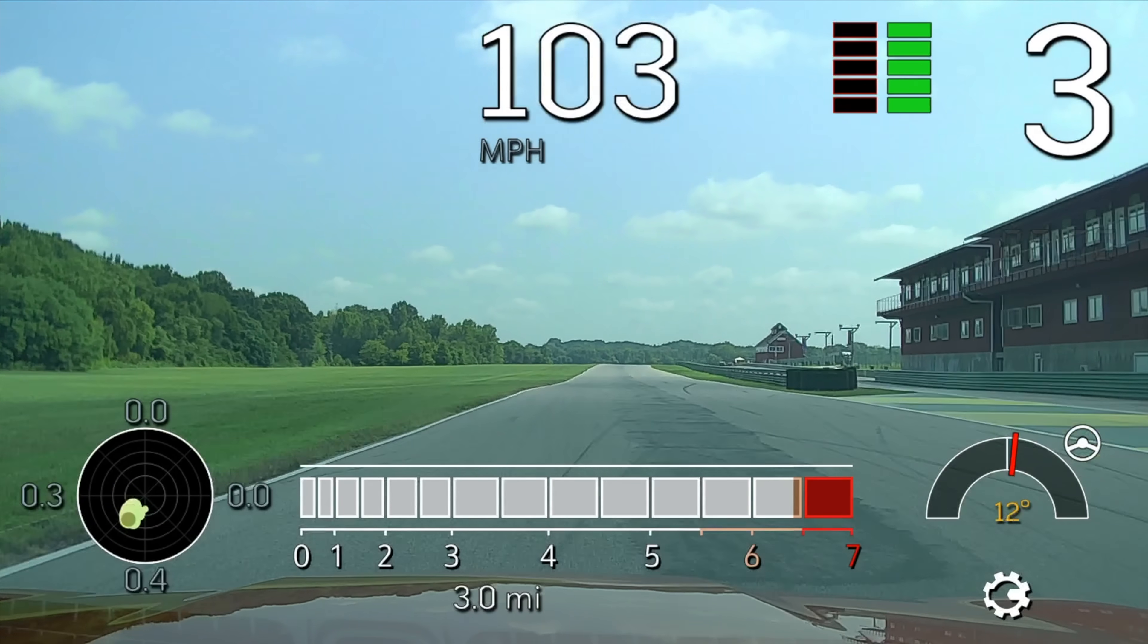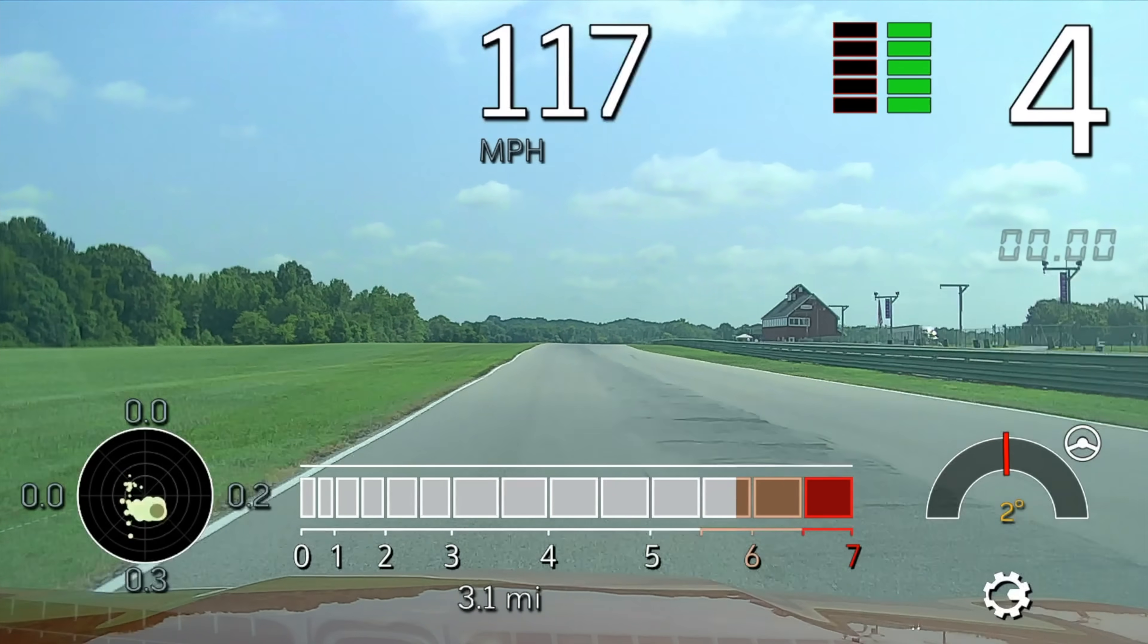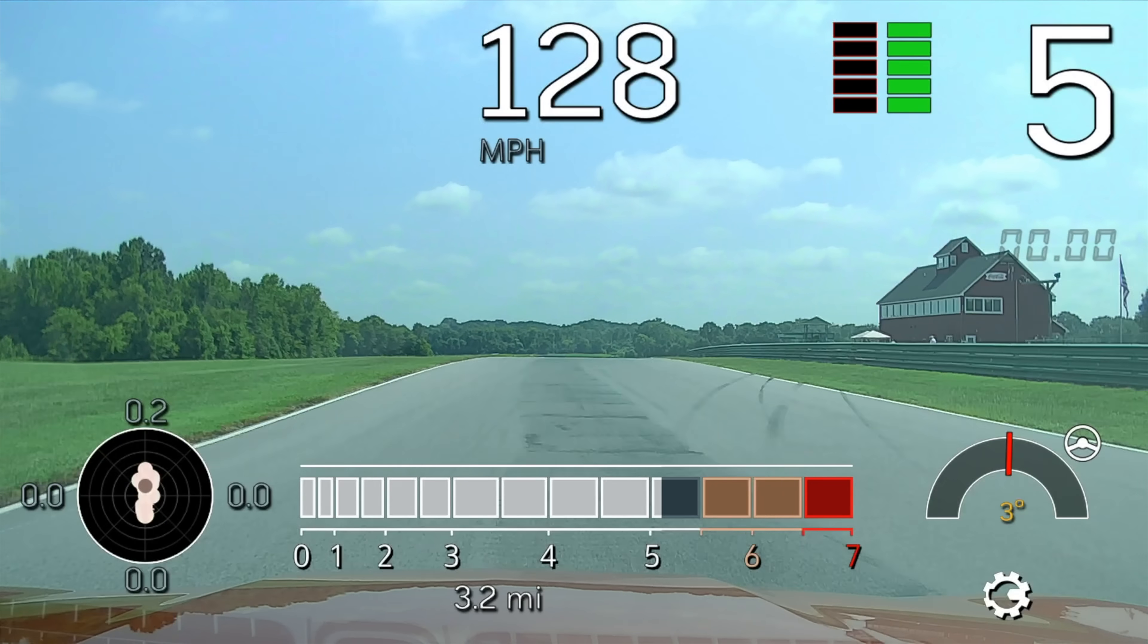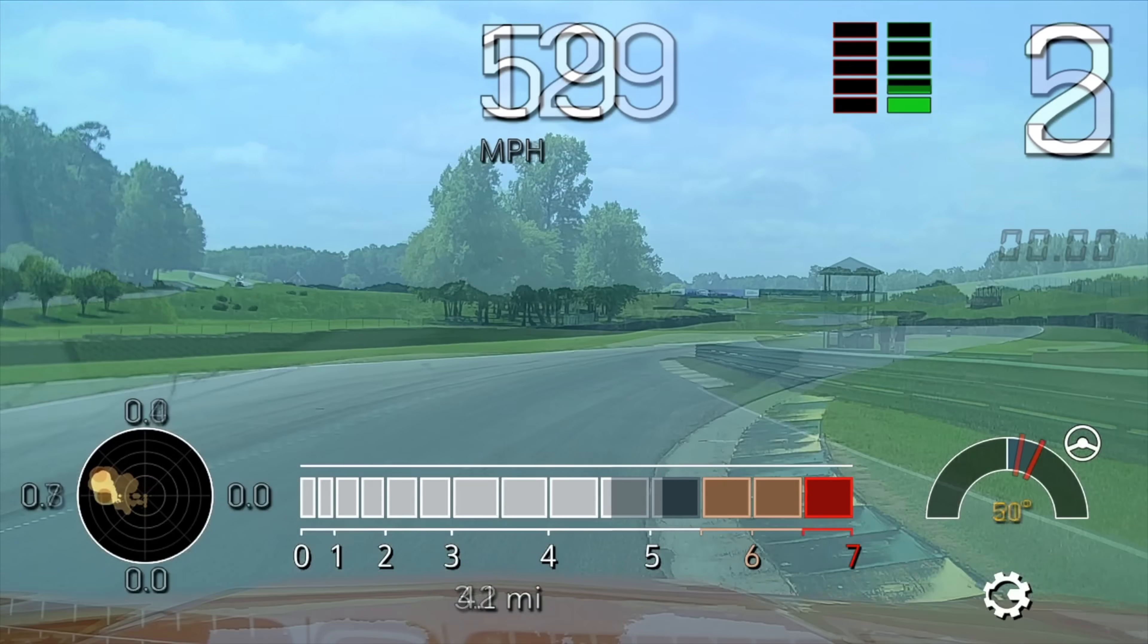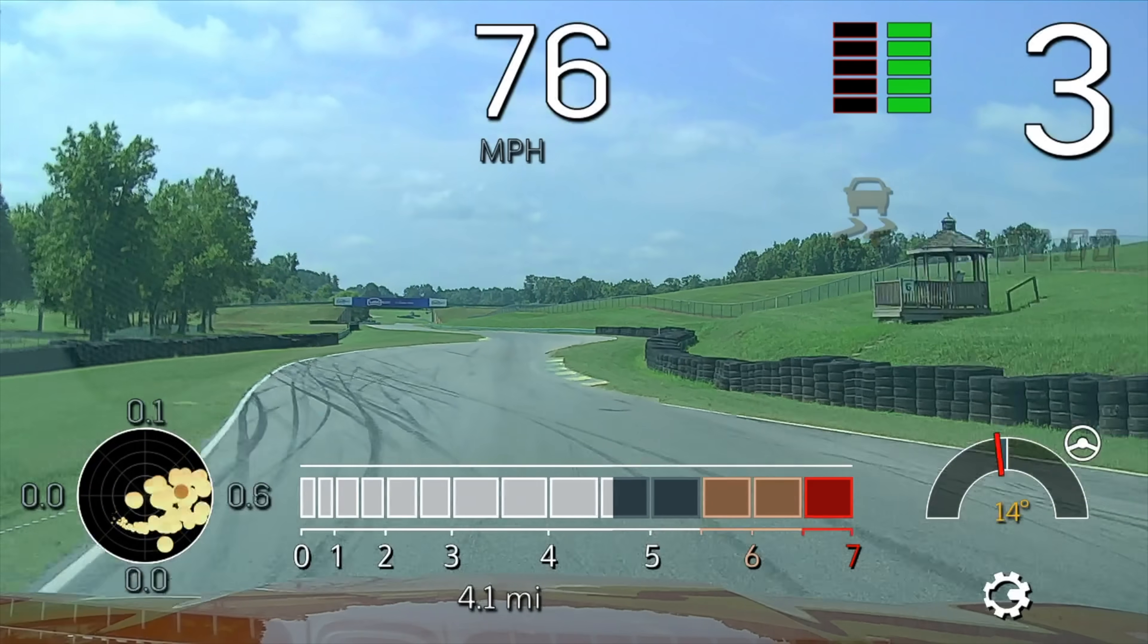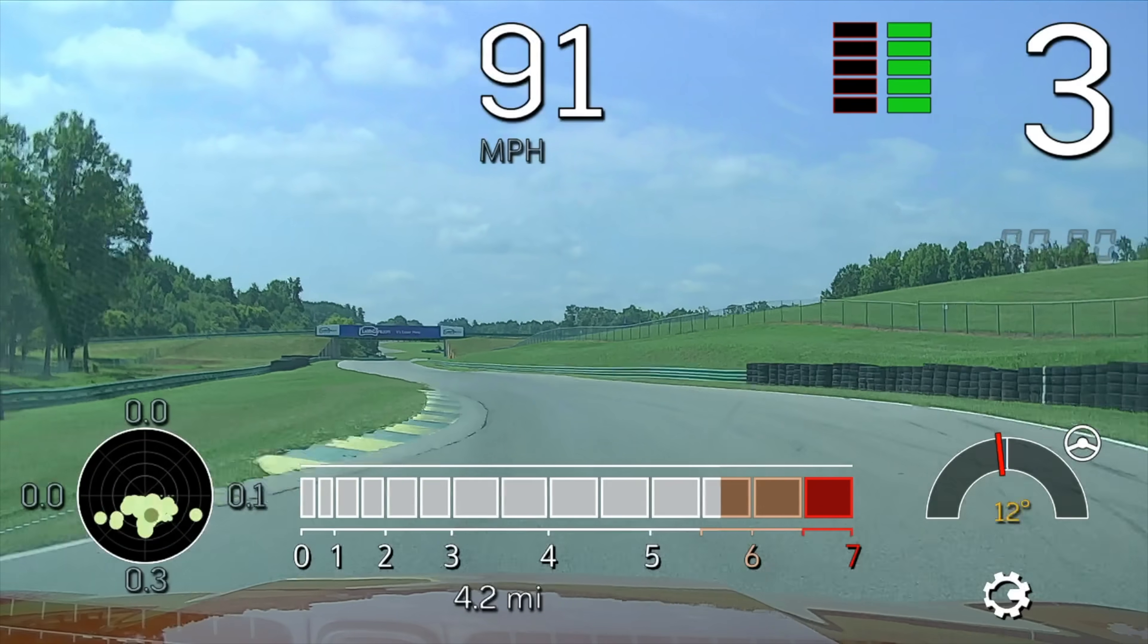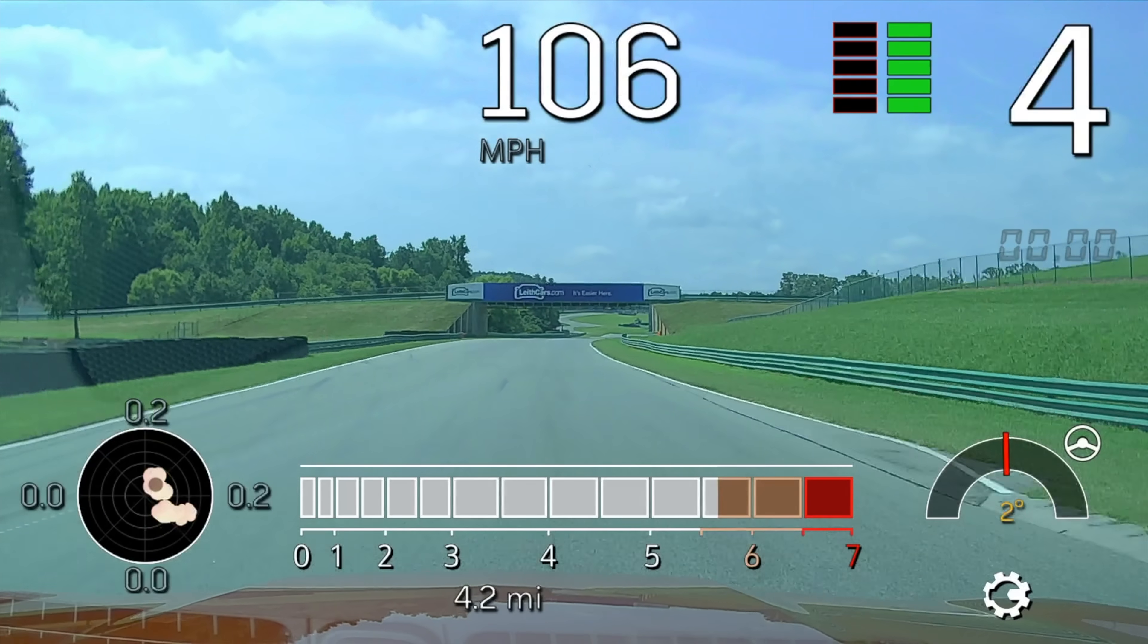However, this is actually a Cadillac CT5 V Blackwing that we're looking at. So this is a supercharged V8, not a turbocharged engine. So turbocharged engines get a bit more benefit from flat foot shifting because you're able to maintain that boost and not lose the boost through the shift.